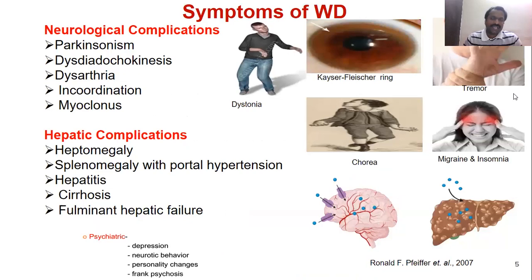Wilson disease predominantly presents in two ways: neurological complications and hepatic complications. Neurological complications include Parkinsonism, dystonia, tremor, chorea, and migraine. Hepatic complications include hepatomegaly, splenomegaly with portal hypertension, hepatitis, cirrhosis, and in later stages hepatic failure. A subset of patients can also show psychiatric problems.